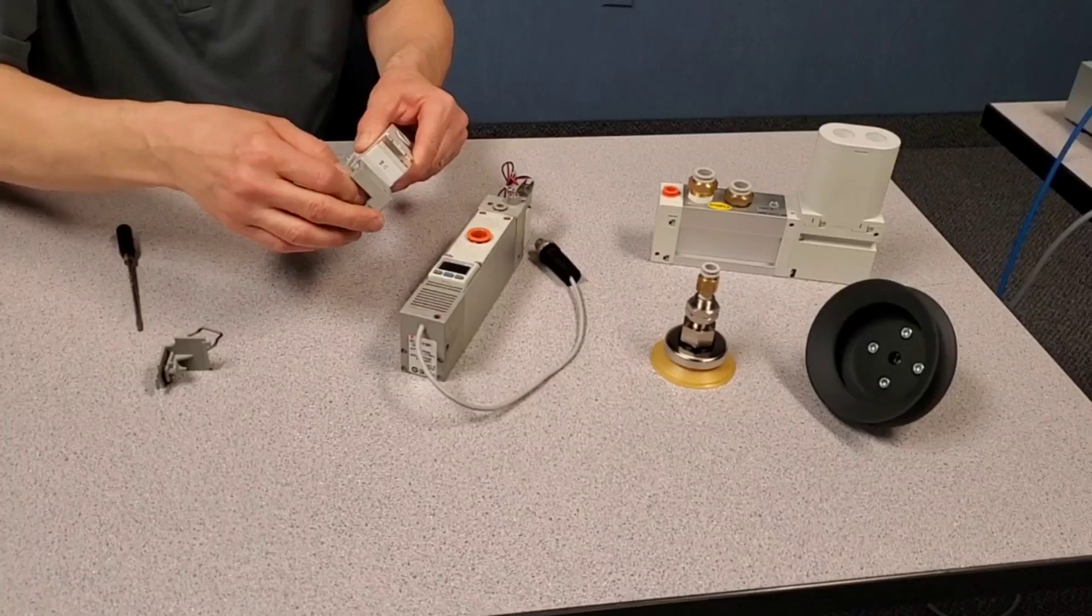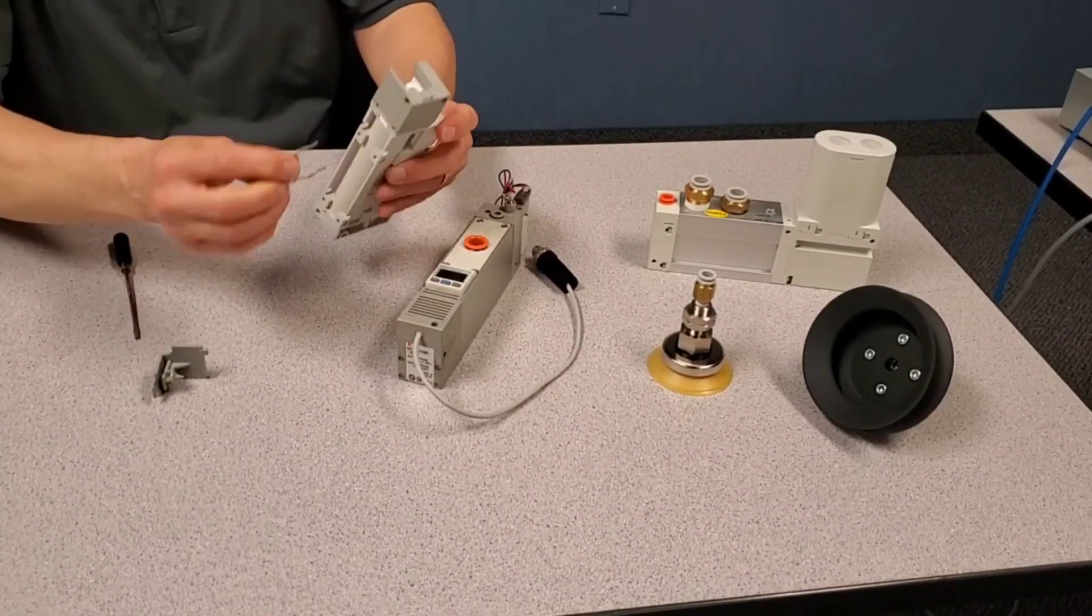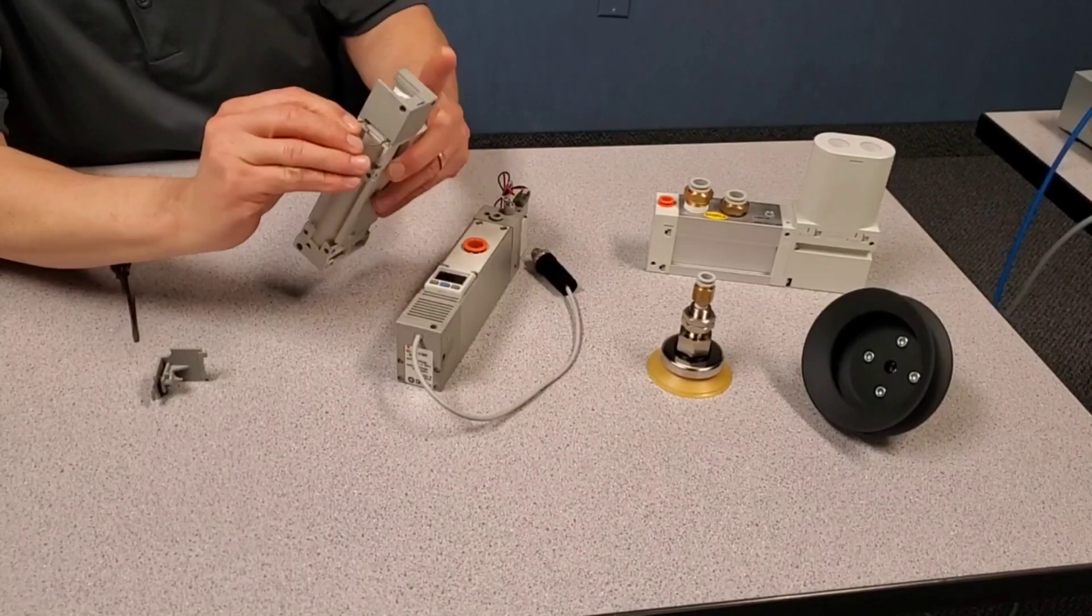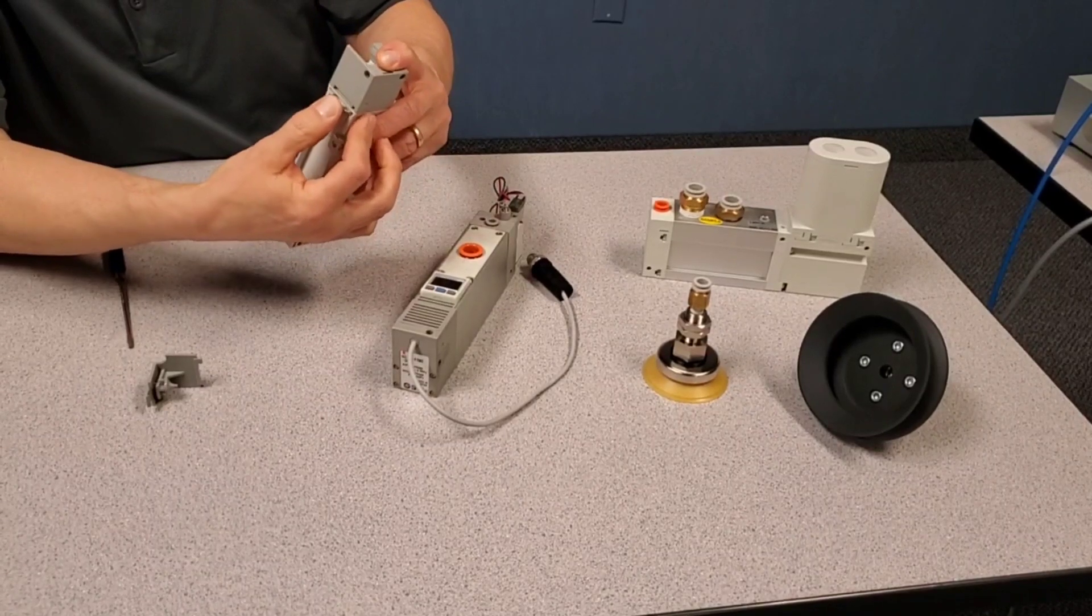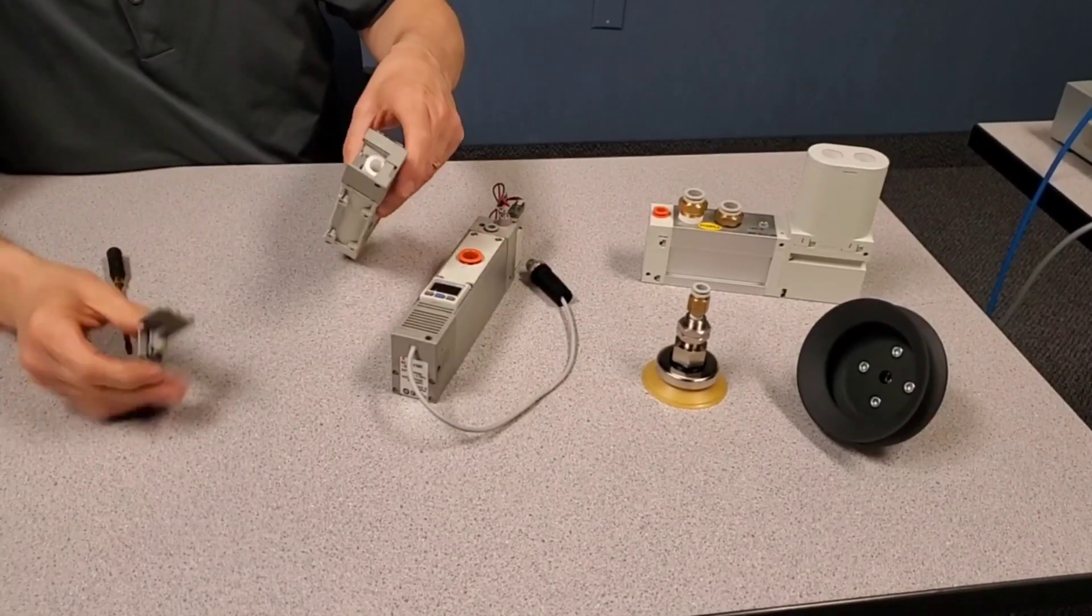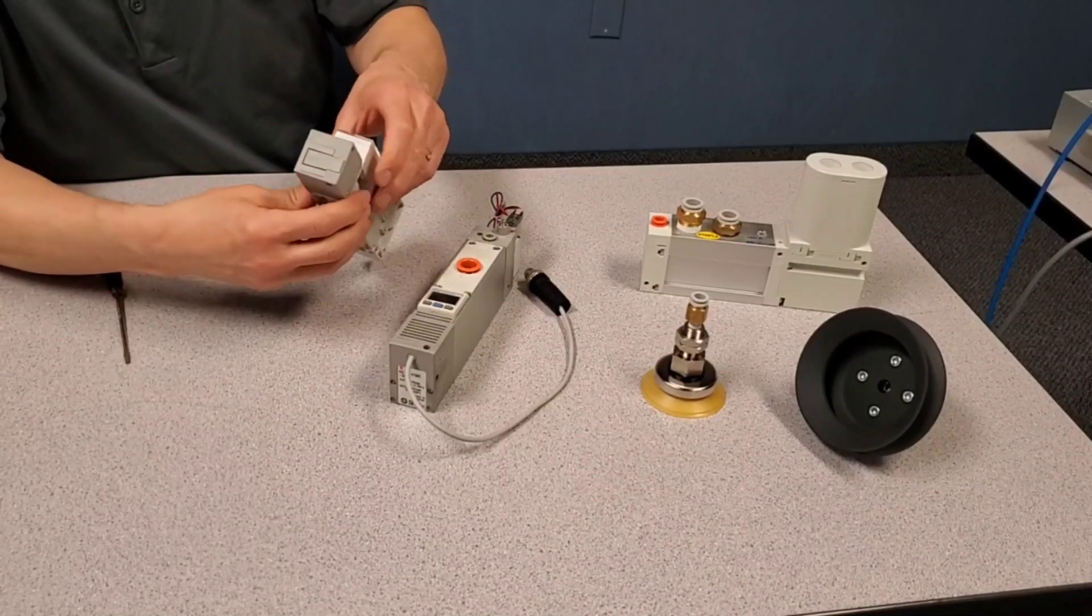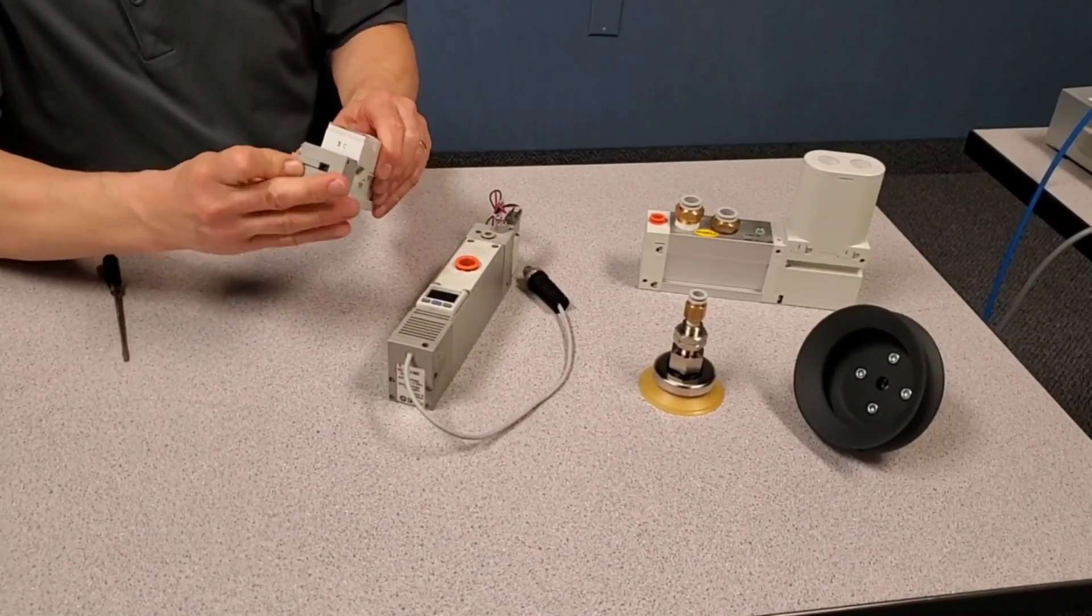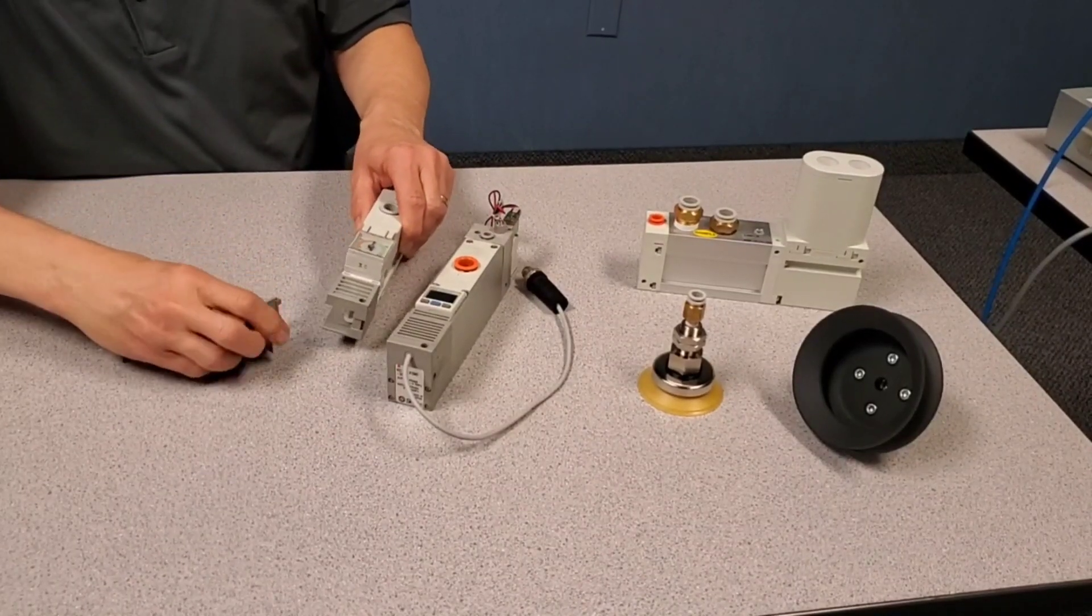Sound absorbing material goes in. Then a retaining clip is placed inside there, and the cover for the silencer and sound absorbing material goes on. These items are easily removed for ease of maintenance.